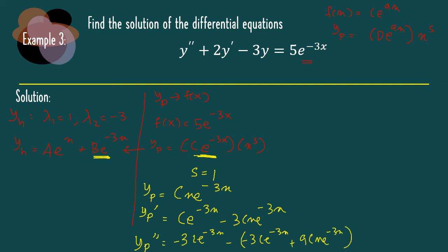Now we already have yp, yp prime, and yp double prime. Let's substitute these three equations into our original problem. Substitute everything.